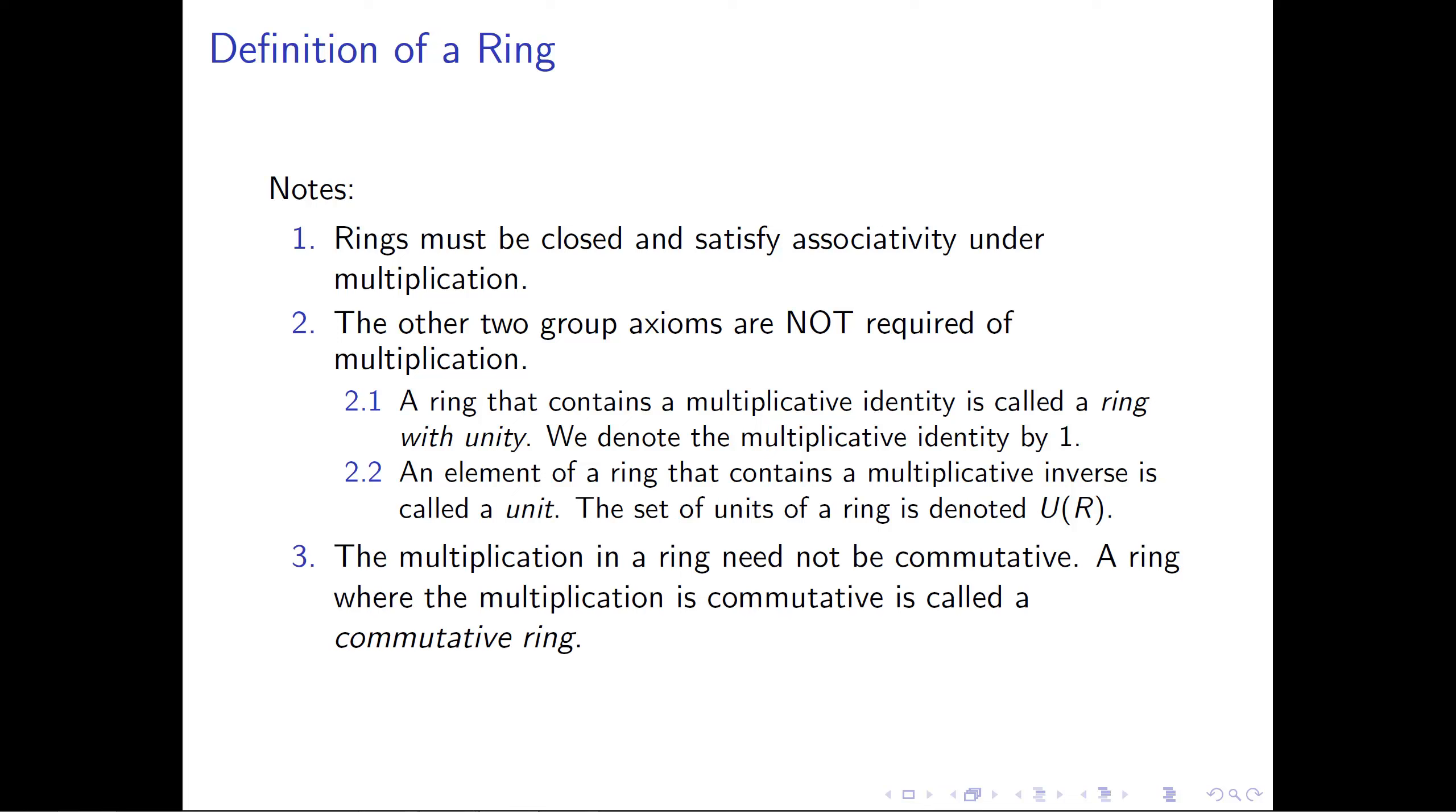And the last note that we really want to make about this definition is that we are not requiring that the multiplication be a commutative operation. We're requiring that of the addition, but not of the multiplication. If our ring happens to be commutative with respect to multiplication, then we will call the ring a commutative ring. And I also want to note that this is really the reason that when we list the distributive property on the previous slide, that we have two different versions of the distributive property. One where we distribute the multiplication from the left, and one where we distribute the multiplication from the right. Because we're not requiring that our multiplication be commutative, we really need to require the distributive property be satisfied in both directions.